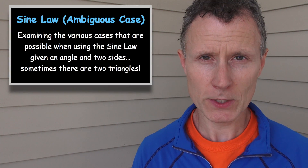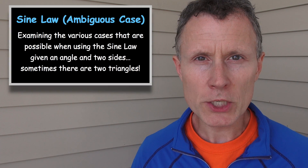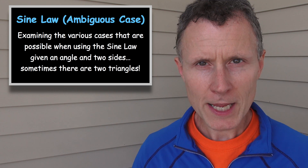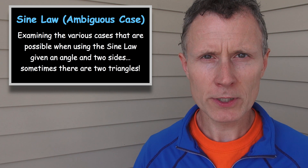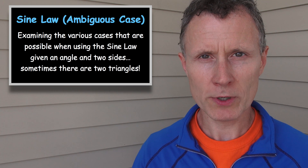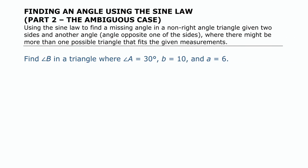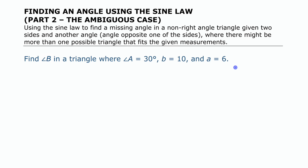In this video we are going to look at something called the ambiguous case of the sine law — a situation where you have some information about a triangle and there are actually two different possible triangles that you can create from that information.